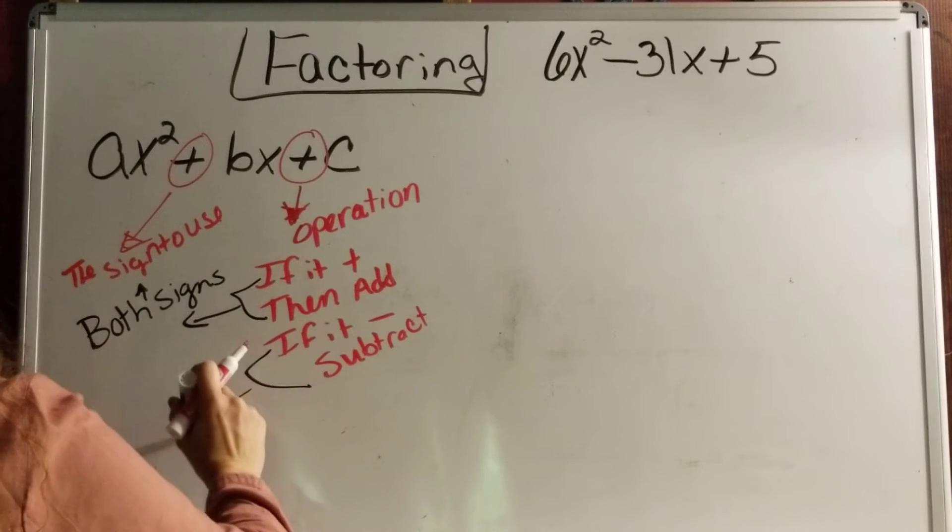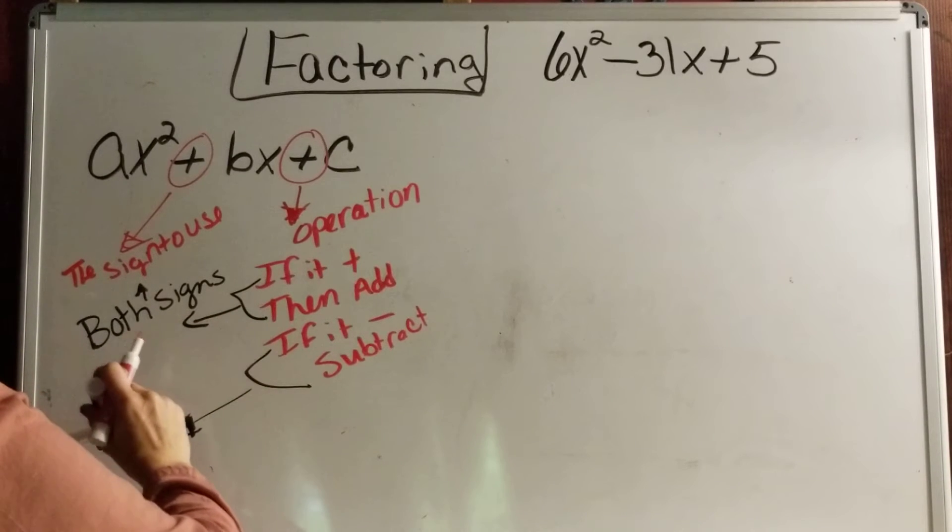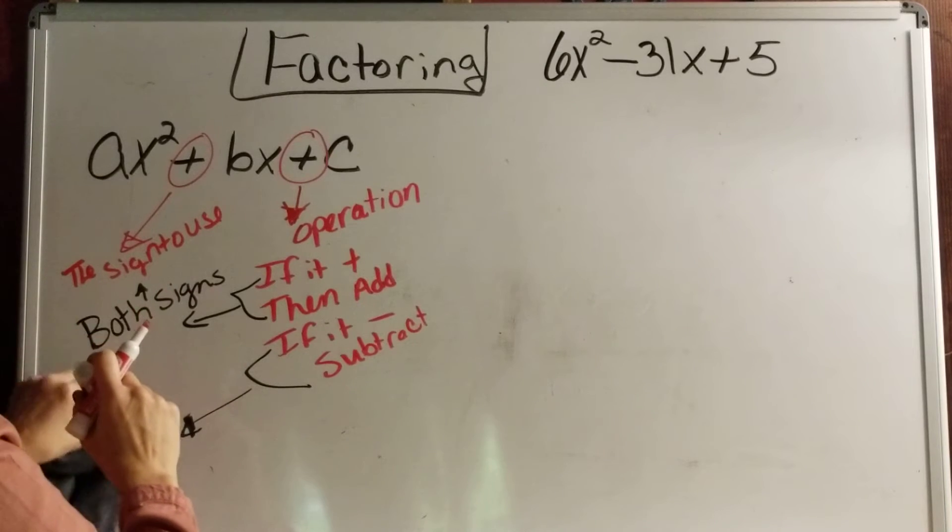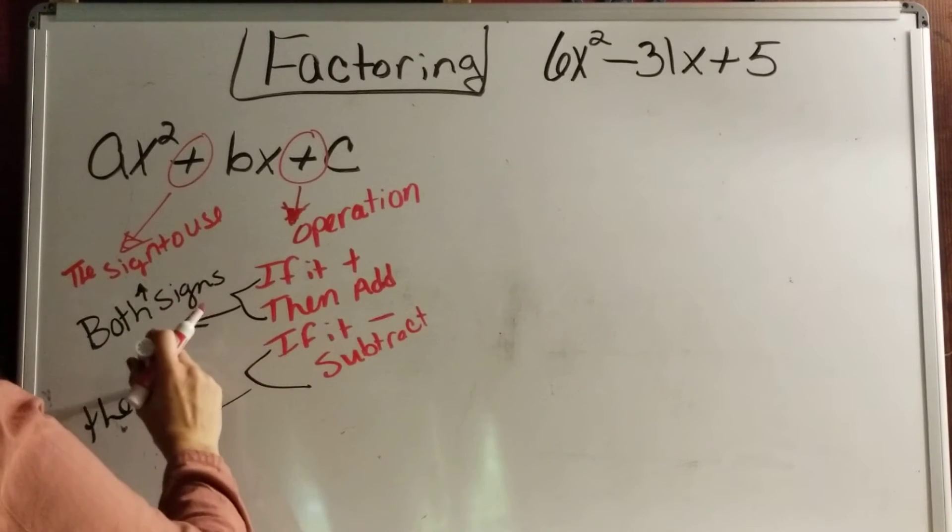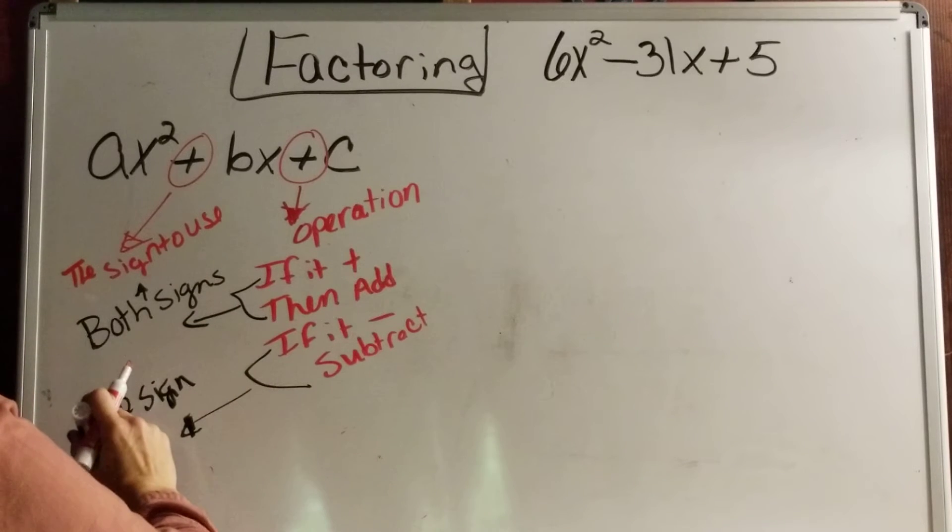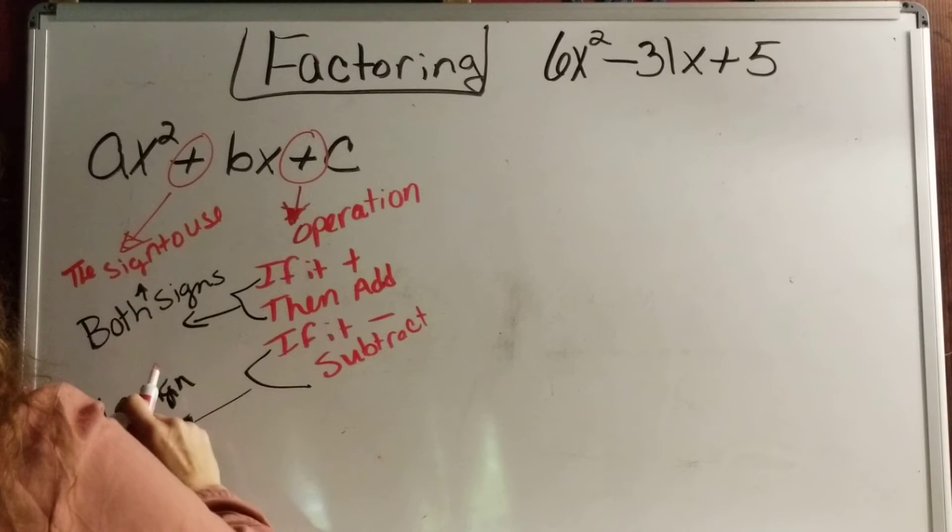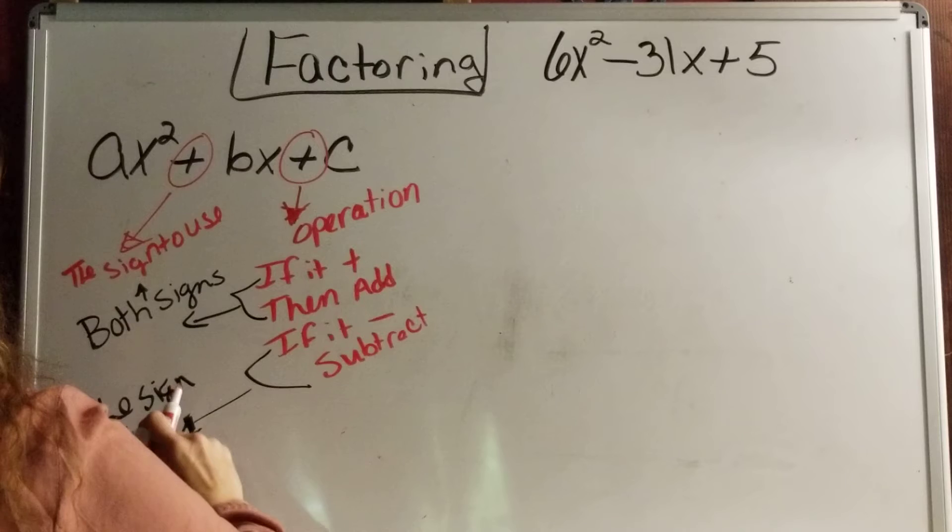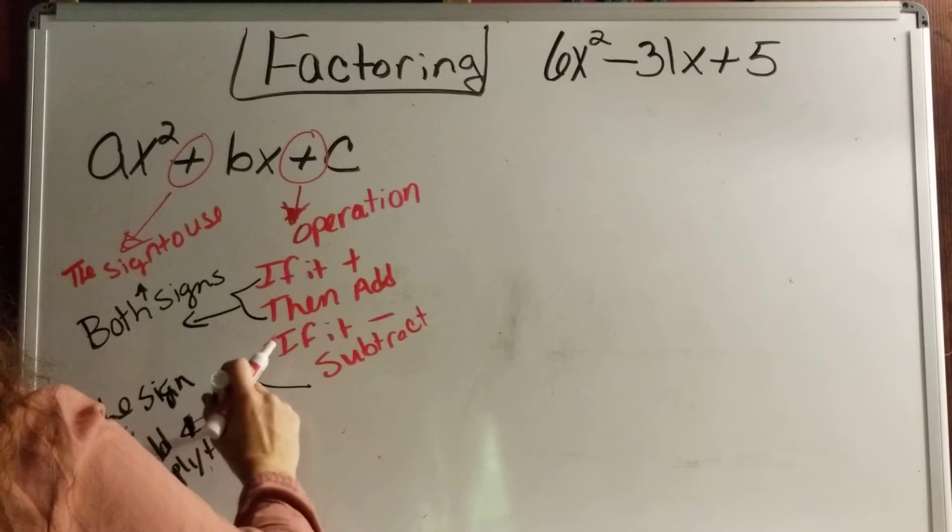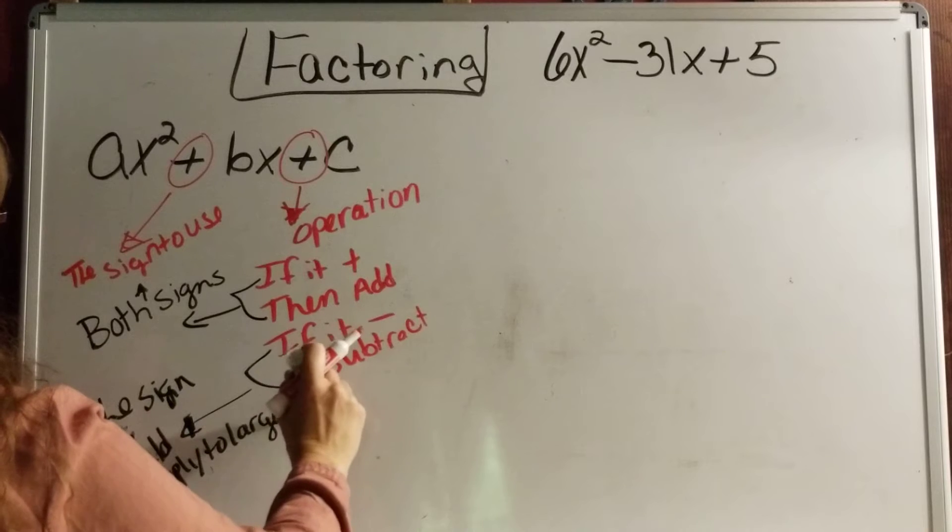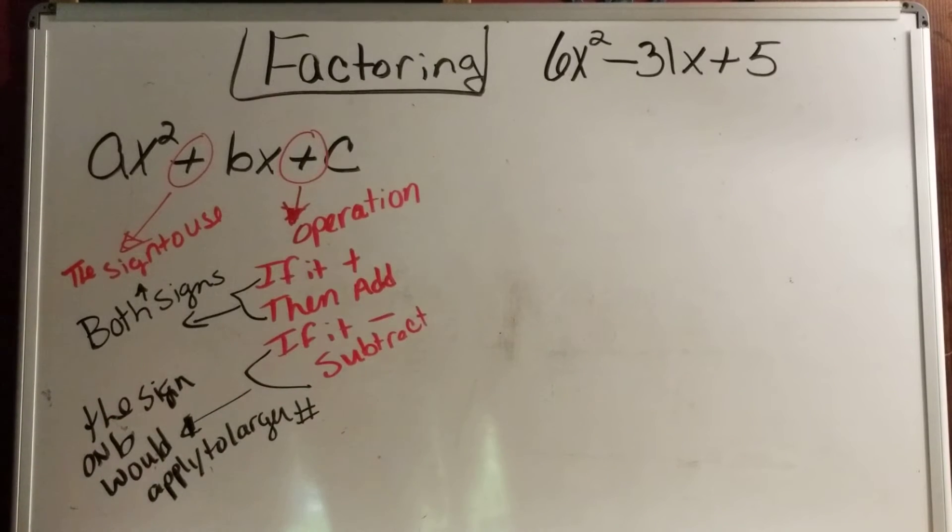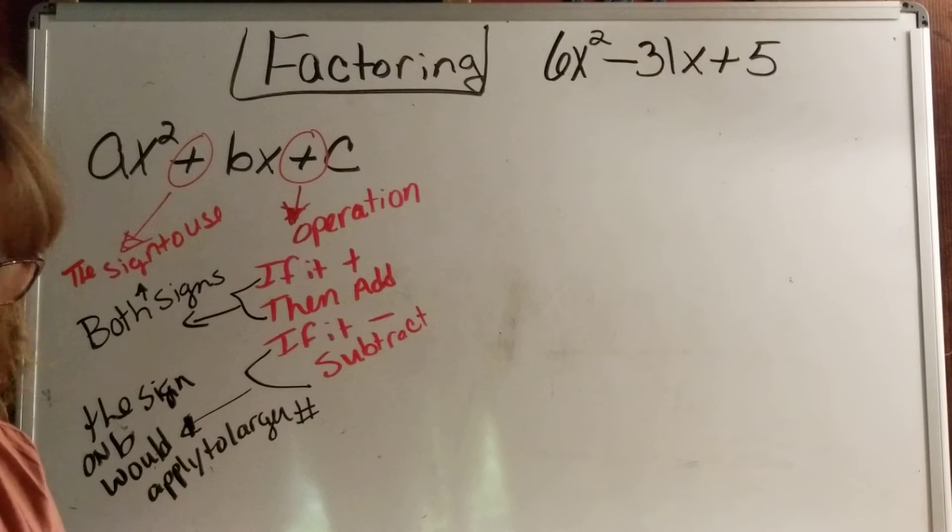If it's subtracting, then the sign on B would apply to the larger number. And like I said, I'm fixing to explain this to you when we work out that example. But this is some side notes, so it's very helpful to have over to the side, so that way you can go back and understand later.